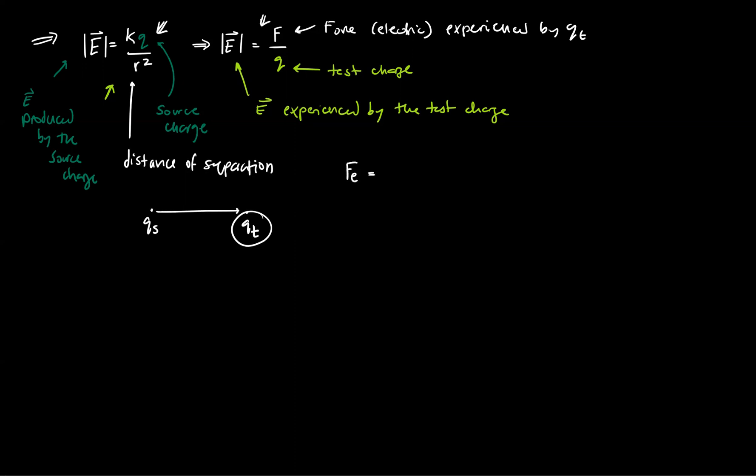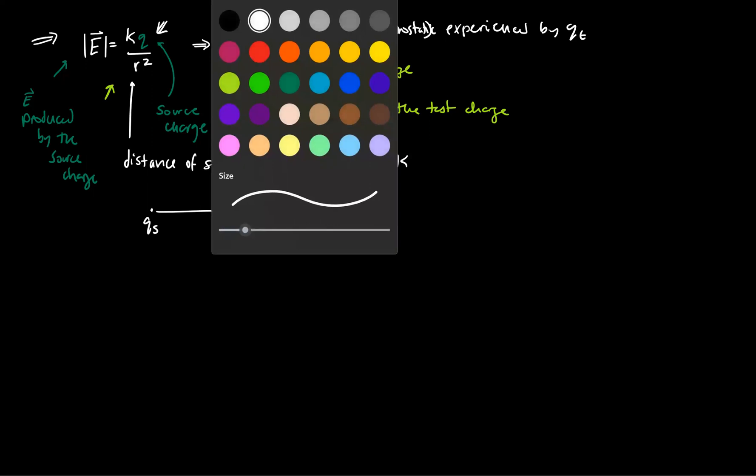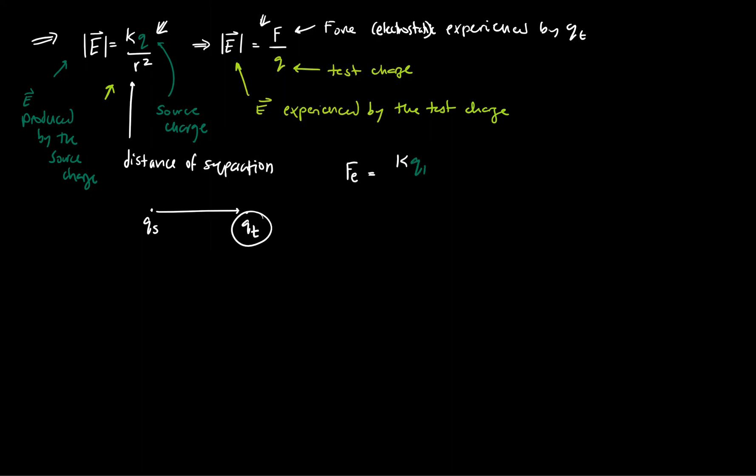So Coulomb's law says that the electrostatic force experienced by something is going to be equal to k q1 q2 over r squared, where r is that distance of separation between q1 and q2. And k is just Coulomb's constant.